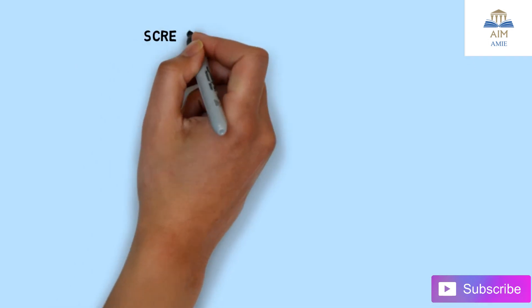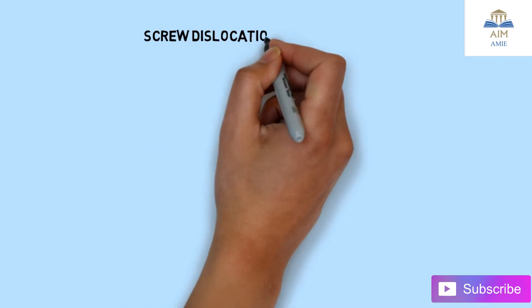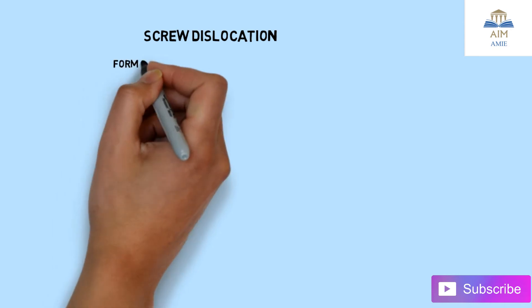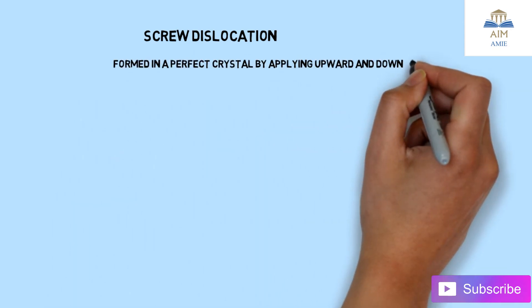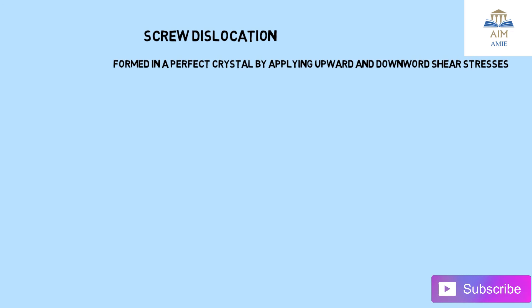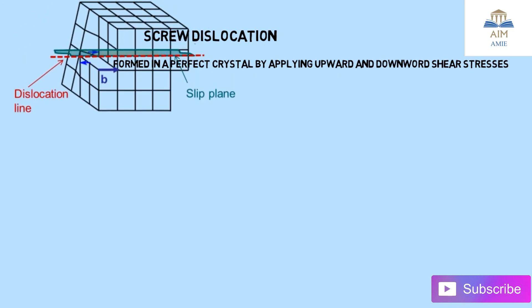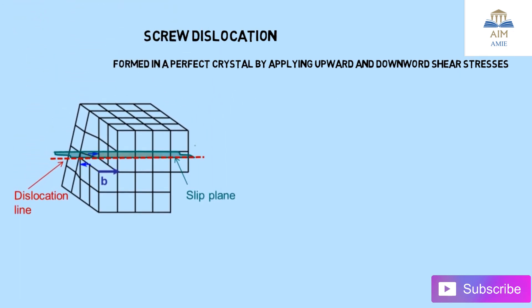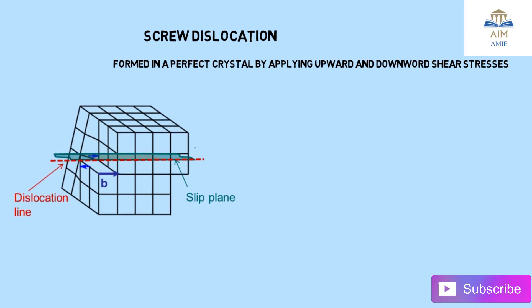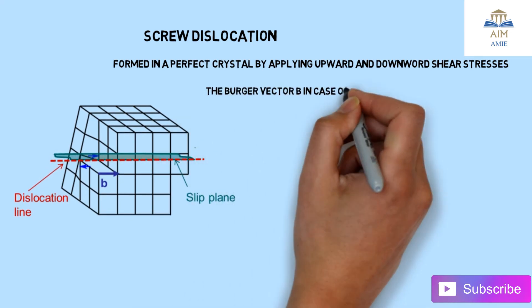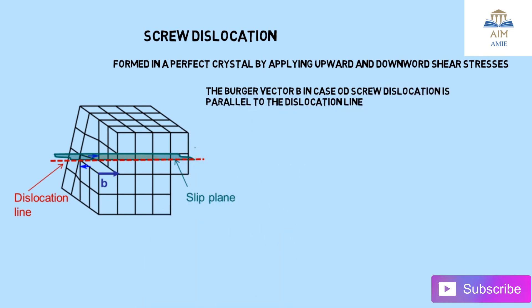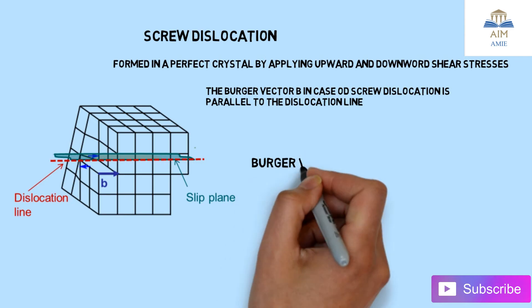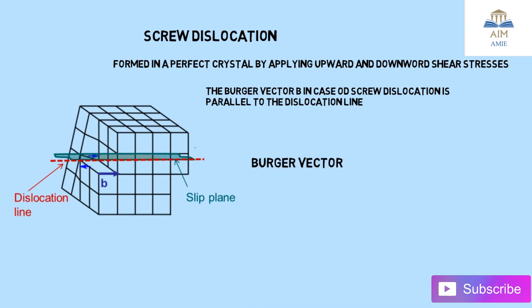The next one is screw dislocation. Screw dislocation is formed in a perfect crystal by applying upward and downward shear stresses — shear stress is a very important term here. In this image, you can see there is a slip plane, a dislocation line, and B, which is the Burgers vector.